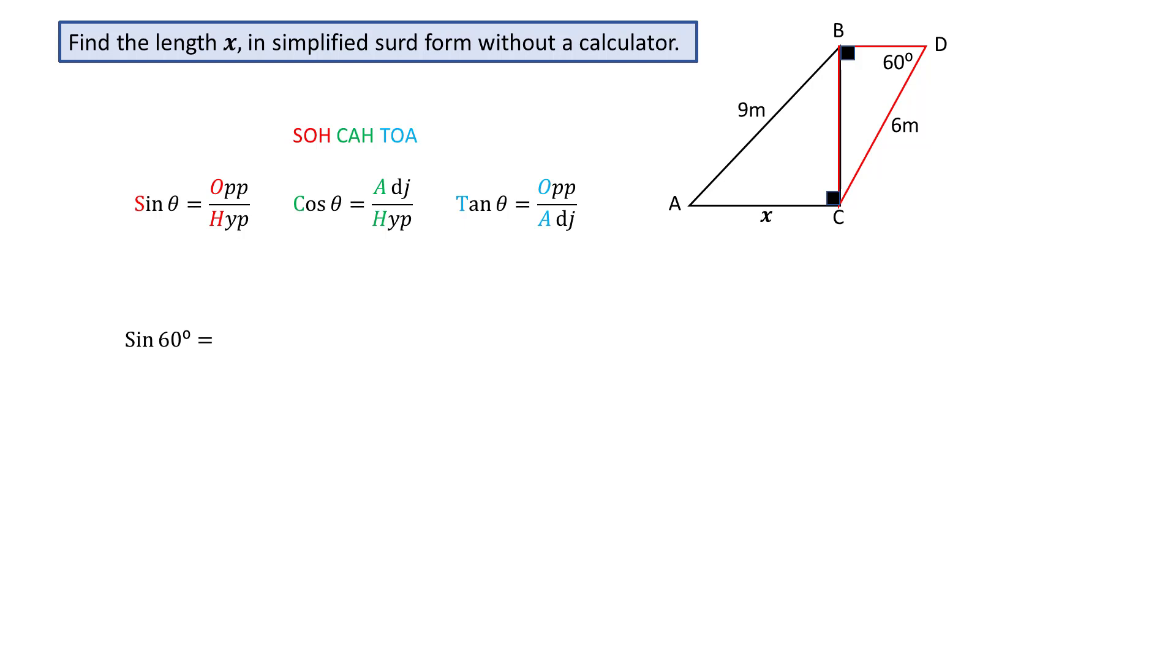So in triangle BDC, sin 60 equals BC, the side opposite 60 degrees.